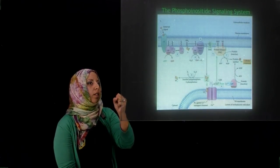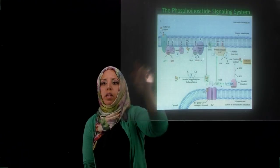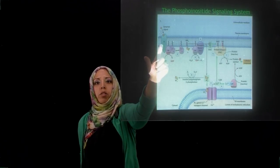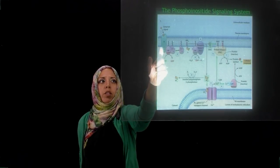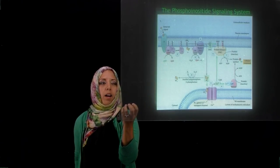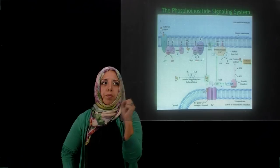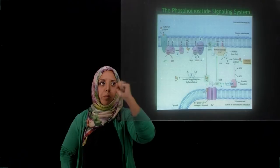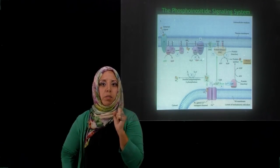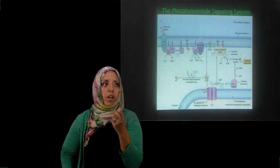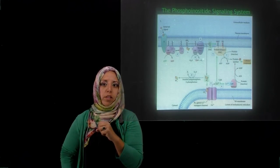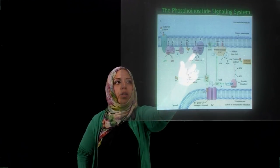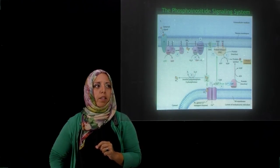A signaling molecule binds to the receptor protein, which is composed of seven different transmembrane helices. The binding of the signaling molecule triggers conformational changes within the cytoplasmic end of that receptor, which then activates a hetero-trimeric G protein to replace its bound GDP with GTP, thereby activating it. This causes the alpha subunit to dissociate from the gamma and beta subunits, and the alpha subunit then binds to phospholipase C.